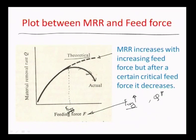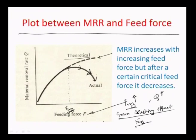The material removal rate comes down after a certain critical feed force because of the grain crushing effect. If the feed force is raised to a value where F_average per unit area of the grain equals the ultimate flow stress of the abrasive grain itself, there is a possibility that the grain gets broken into pieces — grain crushing. The number of active grains at that critical feed force simply goes down because they are themselves getting crushed, reducing the material removal rate.